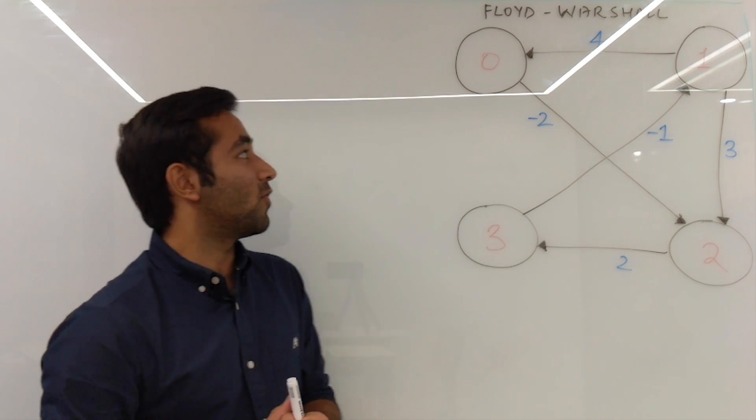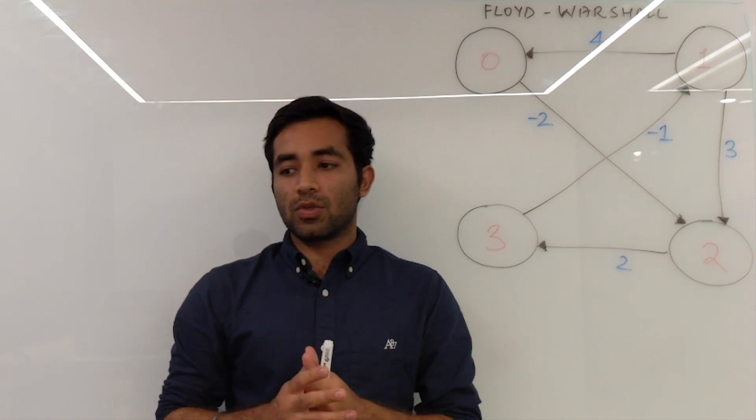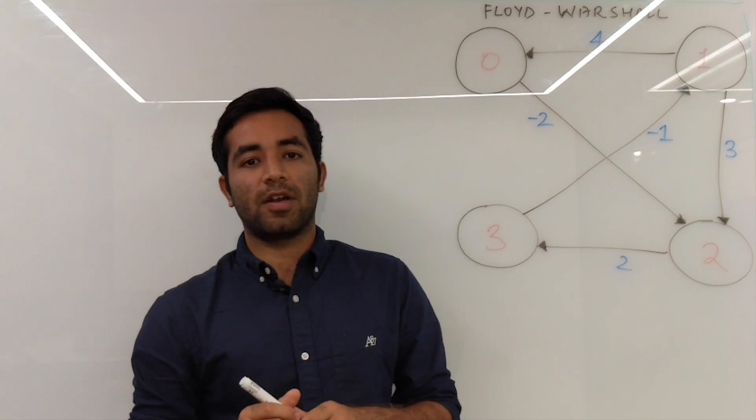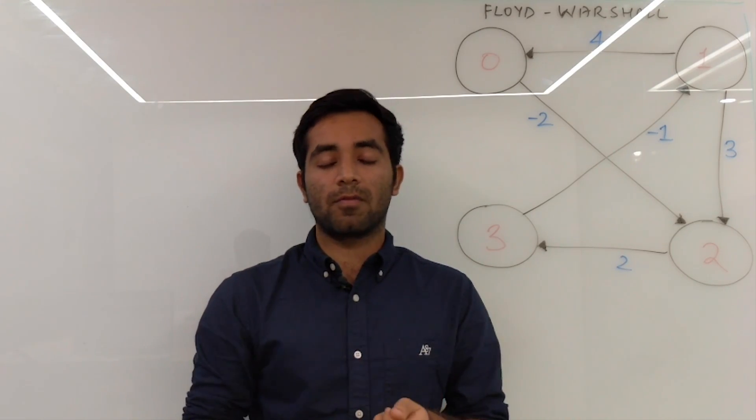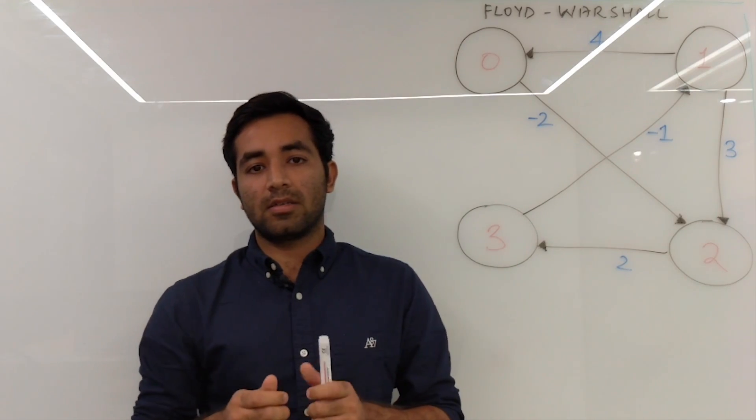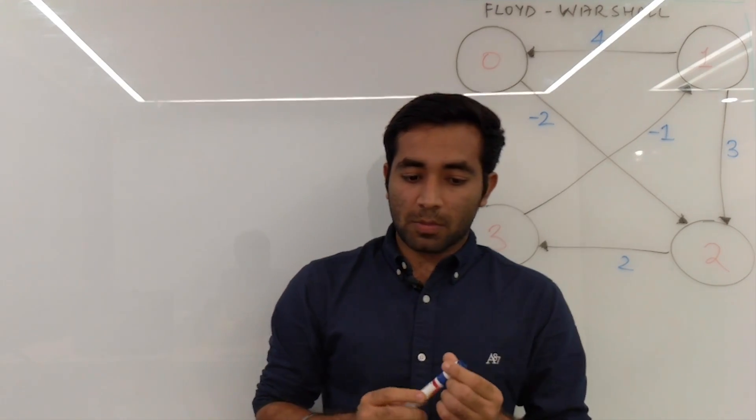So today we'll be talking about Floyd-Warshall algorithm. It is used to find all pairs shortest path and similar to Dijkstra, a little bit different as it considers all the vertex pairs, while for Dijkstra we have a fixed source and it finds the shortest path from that particular source.